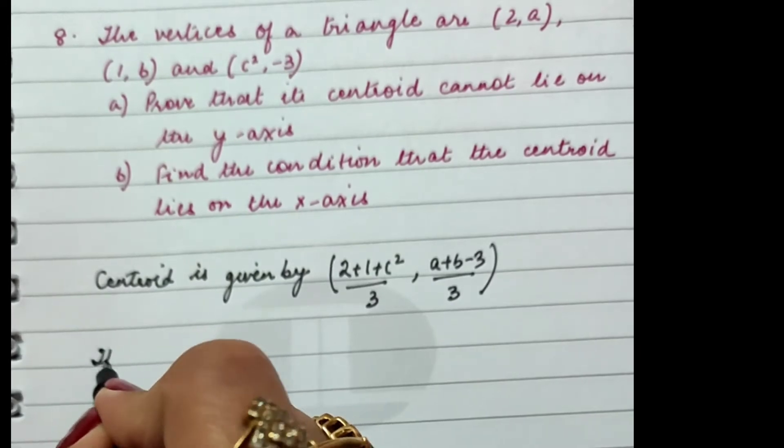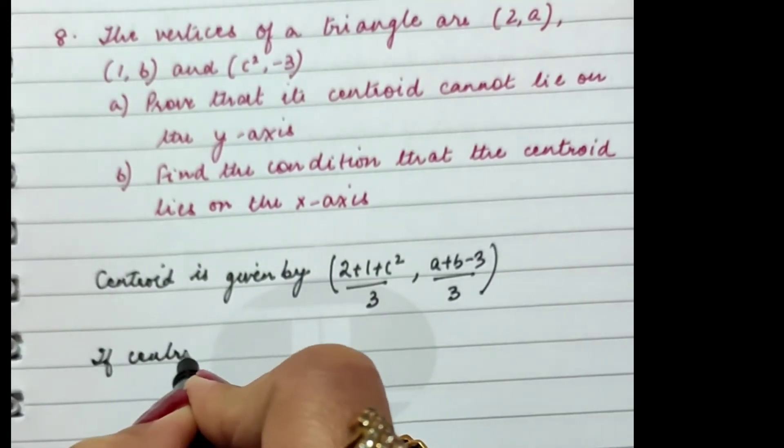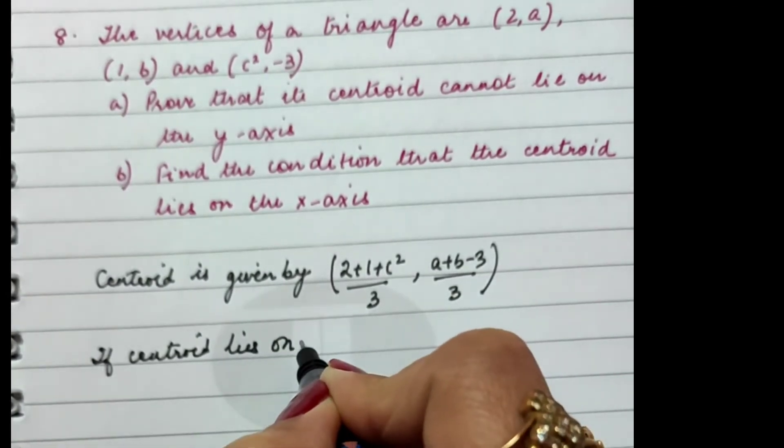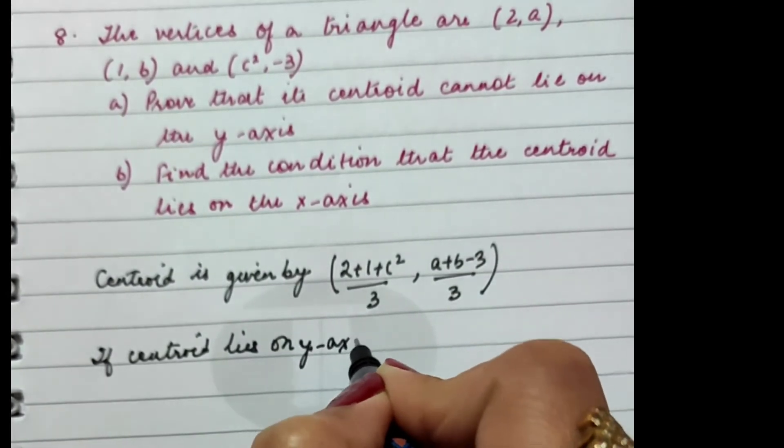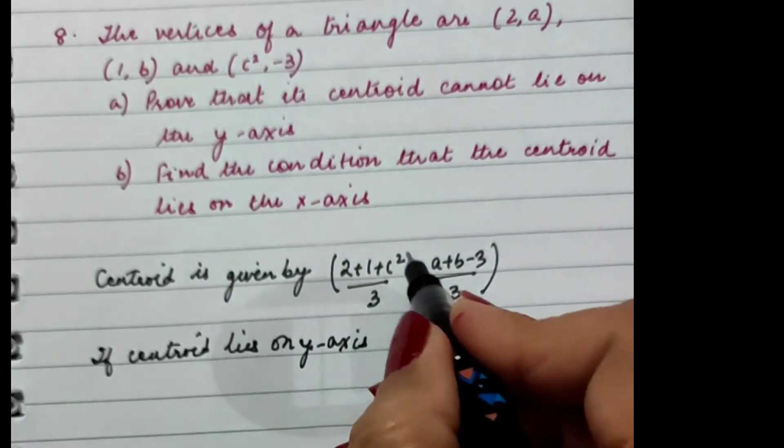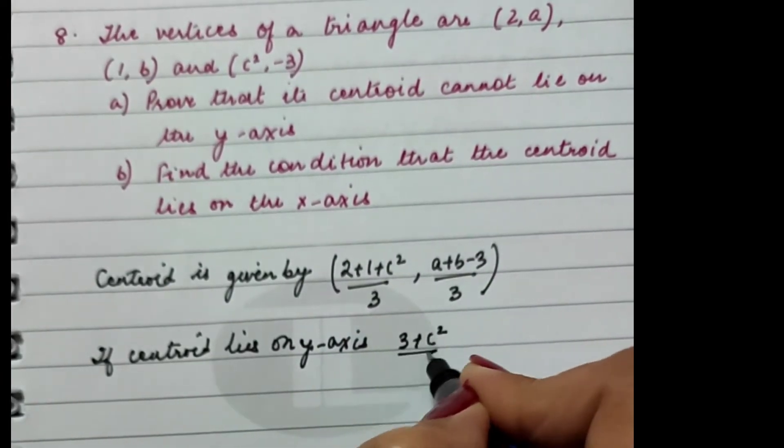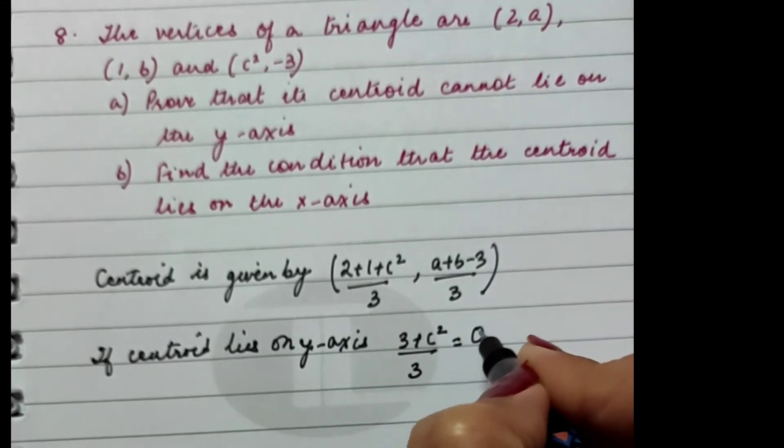So if the centroid lies on the y-axis, then the abscissa is 0. That means (3 + c²)/3 will be equal to 0.